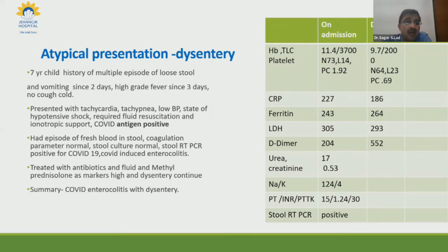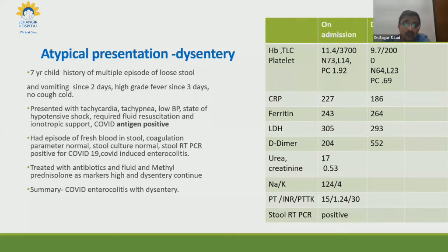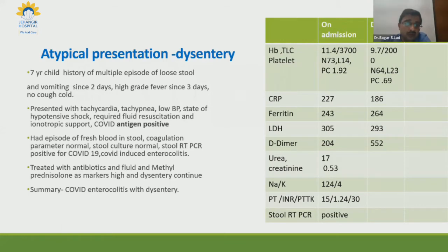CRP was high, ferritin slightly elevated, hyponatremia present, and inflammatory markers were raised. We initially tried supportive measures with antibiotics and fluid resuscitation, but the child was not settling. She was evaluated for other causes of blood in the stool, and ultimately we started steroids at 2 mg/kg of hydrocortisone because she was heading into cytokine storm. The stools then started settling. The take-home message is that we are seeing cases of dysentery or blood in stool with COVID in children — which is extremely rare in the literature, with barely one or two cases reported worldwide.